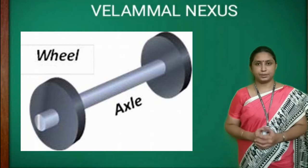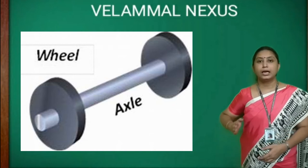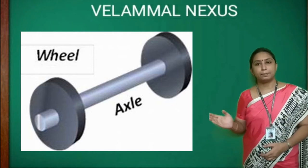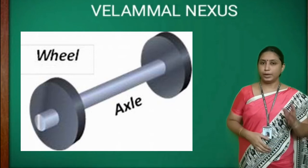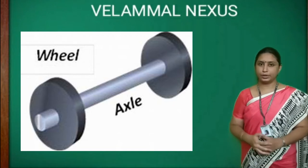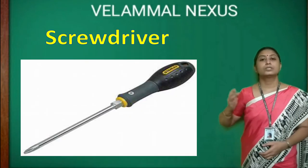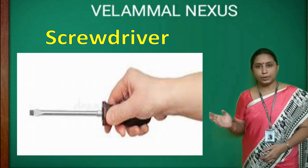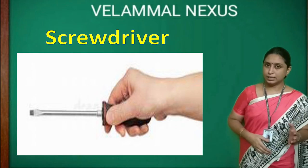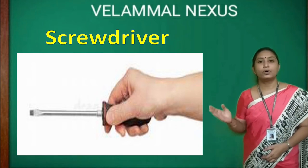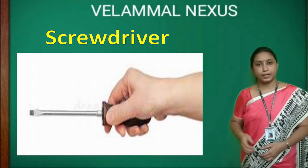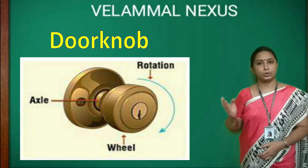In a wheel and axle, a wheel is connected to a rod called the axle. When one rotates the wheel, the axle also rotates. For example, in a screwdriver the handle is the wheel where the force is applied — it turns and increases the force of the axle, which helps to turn the screw.